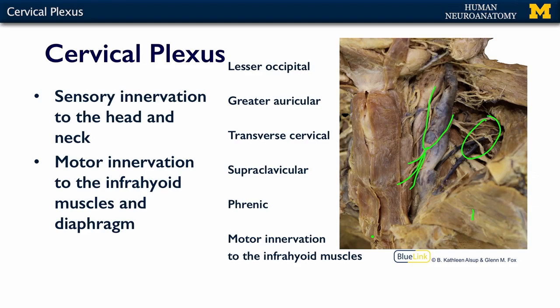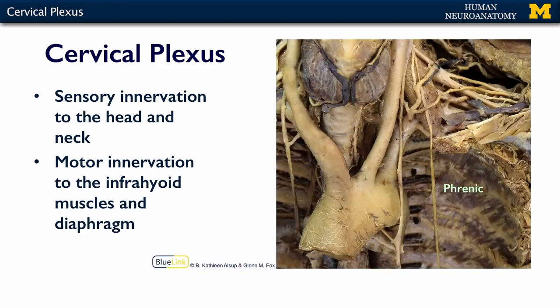In the next slide, here's the phrenic nerve. It's coming down out of the cervical plexus, down through the thorax — it goes just lateral to the heart and heads straight for the diaphragm. In the next segment, we're going to talk about the brachial plexus, which innervates your upper extremity.